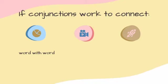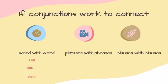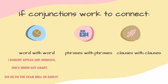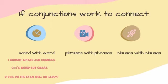Now I'm going to give you some examples of conjunctions connecting words with words, phrases with phrases, or clauses with clauses. On the first sentence, we can see 'and' connecting the words 'apples' and 'oranges.' The second sentence uses 'but' to connect the words 'weird' and 'smart.' The third sentence uses 'or' to connect the words 'well' and 'badly.'